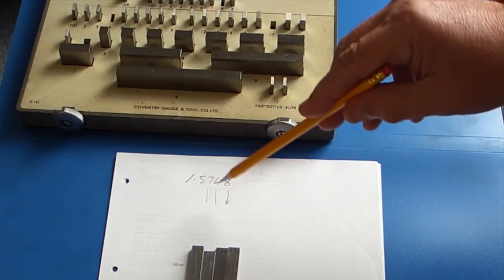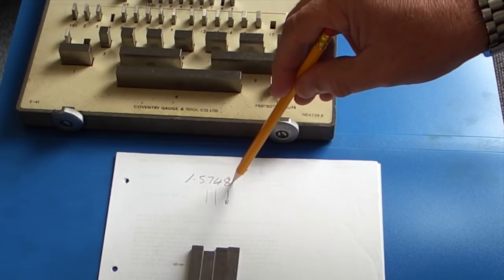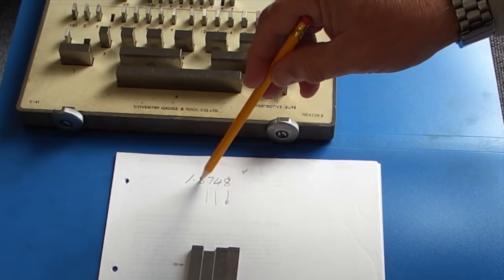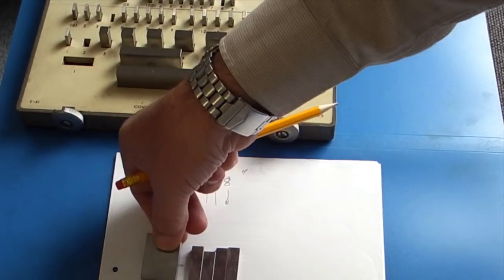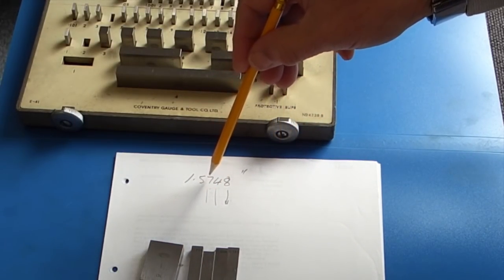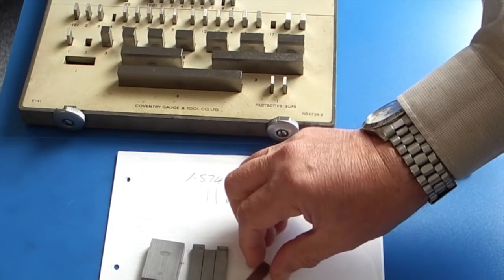So all those add up to 0.5748. And to get the inch we can just take the inch block, which gives us 1.5748. So we fit these together.